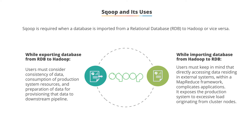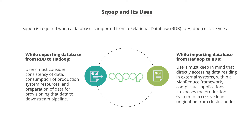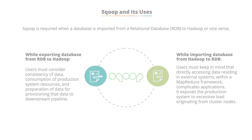While importing the database from Hadoop to a relational database, users must keep in mind that directly accessing data residing in external systems within a MapReduce framework vastly complicates applications. It also exposes the production system to excessive loads originating from the cluster node's operations. In this case, Sqoop is required in both scenarios to optimize these transfers.